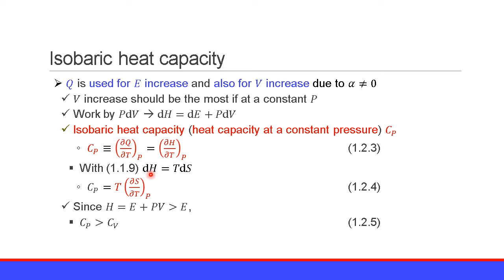The heat increase equals T times the entropy increase. Therefore, the heat capacity Cp is equal to temperature T times the partial derivative of entropy S with respect to temperature T at constant pressure P.